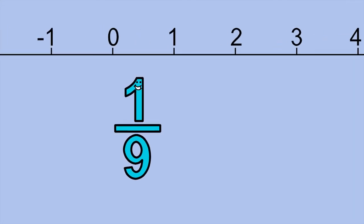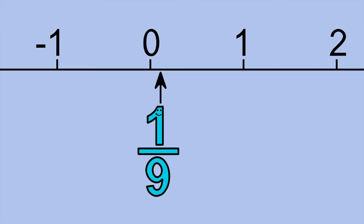You can find me on the number line between zero and one. If you divide the line segment between zero and one into nine equal-sized parts, I'm at the end of the first part.